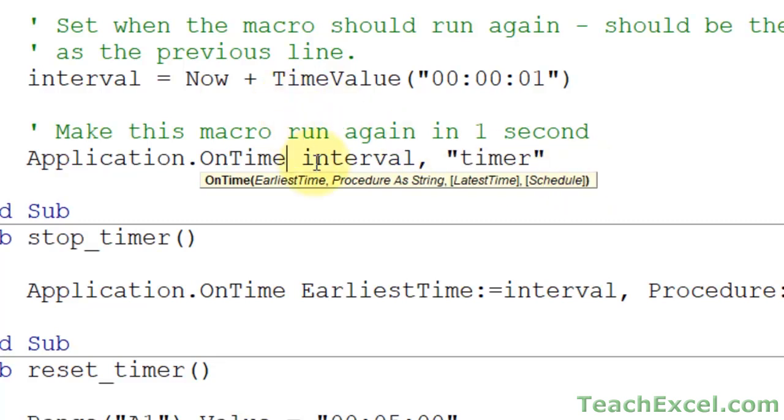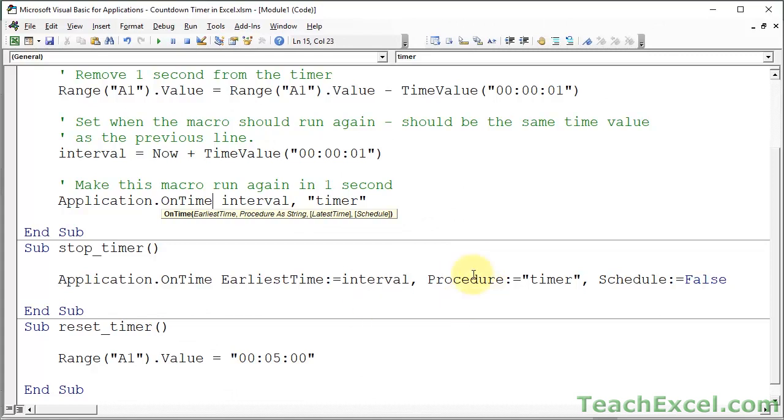I could have put earliest time and procedure the same way that I did down here. It's really just up to you how you want to do it. So for the first part, this earliest time equals interval is exactly the same as this interval. And timer here the same as this procedure equals timer.